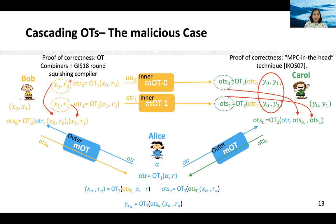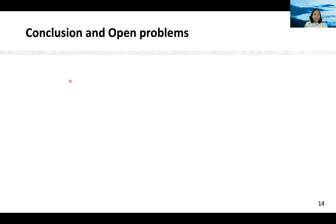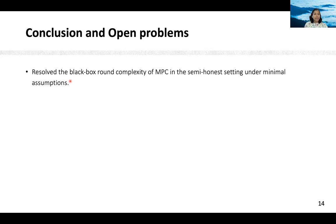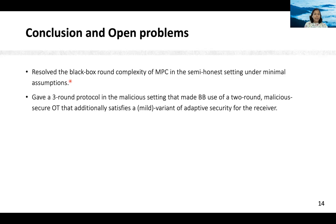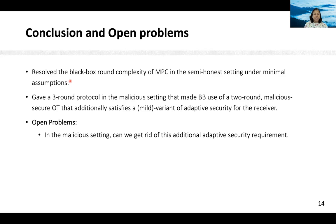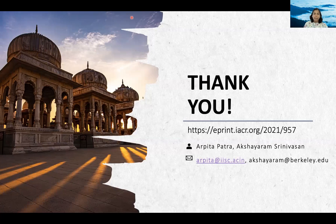Please look at our full paper for more details. To conclude, we resolved the black box round complexity of MPC in the semi-honest setting under minimal assumptions. We gave a three-round protocol in the malicious setting that made black box use of a two-round maliciously secure OT that additionally satisfies a mild variant of adaptive security for the receiver. An interesting open question is whether in the malicious setting we can get rid of this additional adaptive security requirement. Furthermore, designing a concretely efficient protocol in our context is another interesting open question. Thank you for listening.